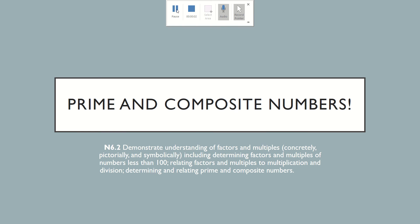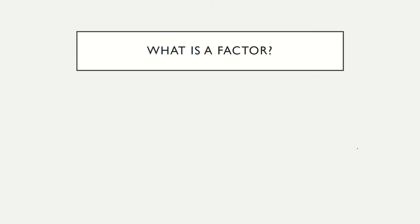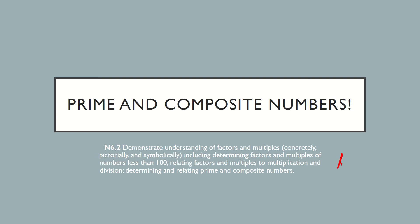Hello, grade sixes! Today you will be working on prime and composite numbers. We're going to look at that same outcome we did the other day: demonstrate an understanding of factors — concretely, pictorially, and symbolically — including determining factors and multiples of numbers less than 100. We're looking at factors today, relating factors to multiplication and division, and determining and relating prime and composite numbers.